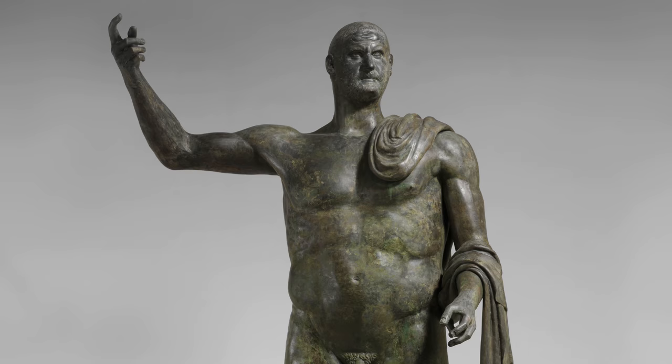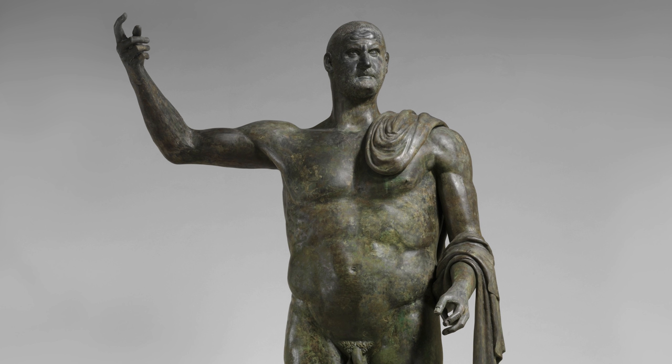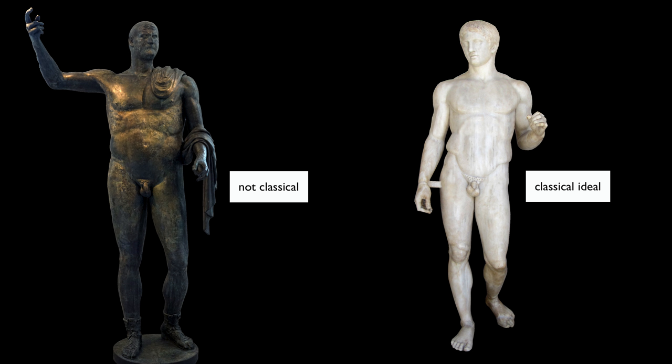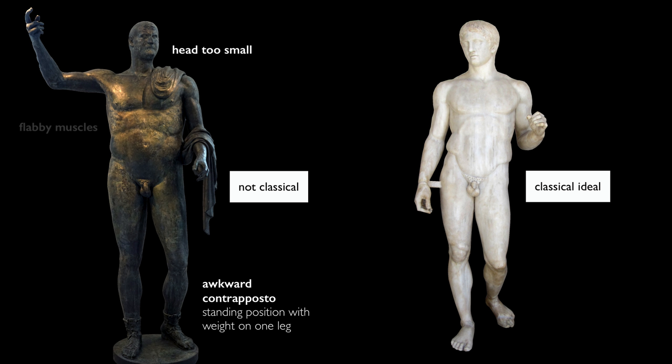Art historians have thought he's an emperor because of his heroic size, his nudity, and the fact that he's gesturing with his right arm up. On the other hand, there are things that are anomalous about him. The most striking thing about this is how unclassical it looks. The proportions seem very off — the head seems much too small for the body, and the contrapposto stance is very awkward.